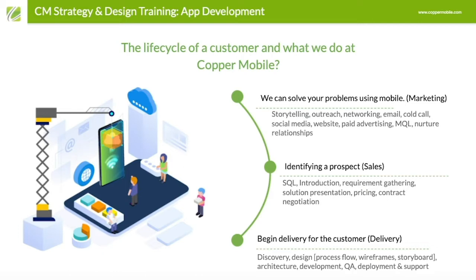It all begins with someone in our department sending out communication, building the website, or running a paid campaign where we say: if you have a problem, we can solve it using mobile. For example, if you have a field team struggling with getting real-time status updates, or too much paper-based process, we write articles to come across as the authority in the field of mobile. That's how our marketing department works.